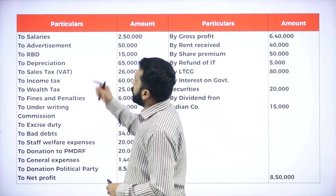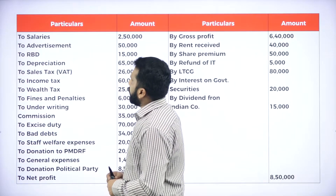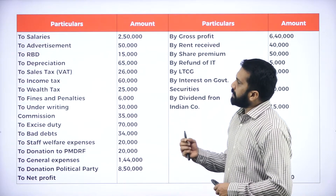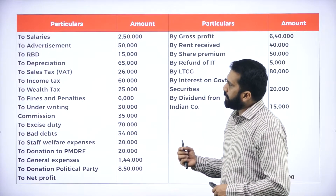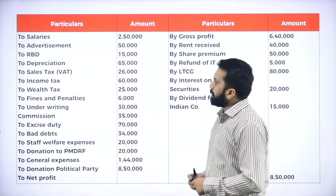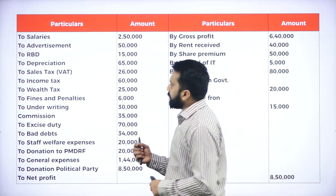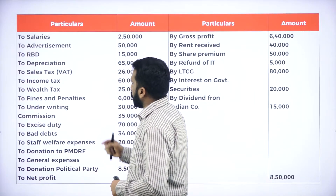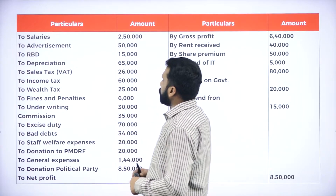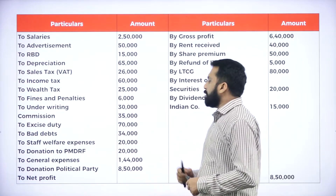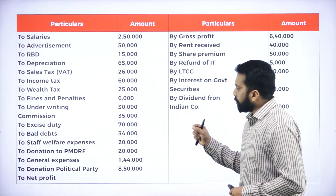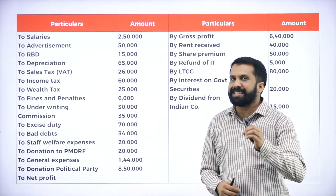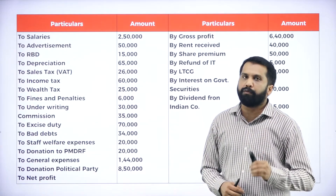So these are the informations on the debit side: salary, advertisement, R.B.D., depreciation, sales tax, income tax, wealth tax, finance penalty, underwriting commission, excise duty, bad debt, staff welfare expense, donation to PMDRF, general expense, donation to political party, and the last one — net profit.